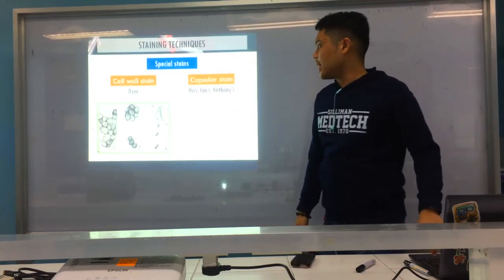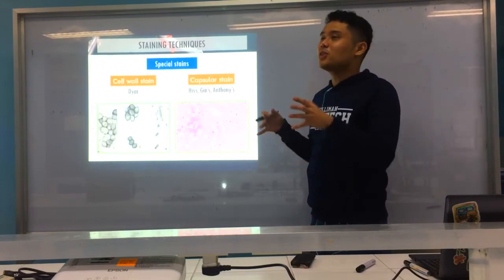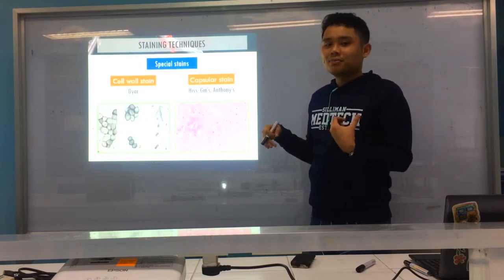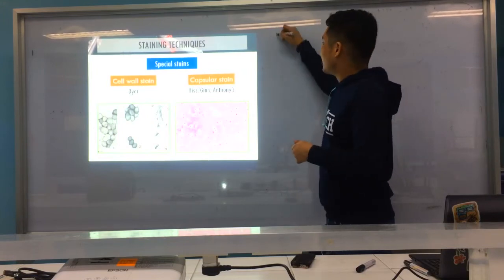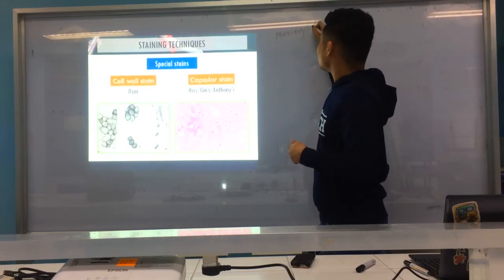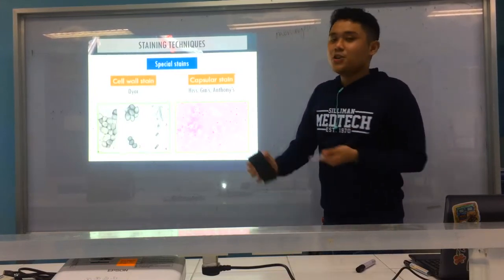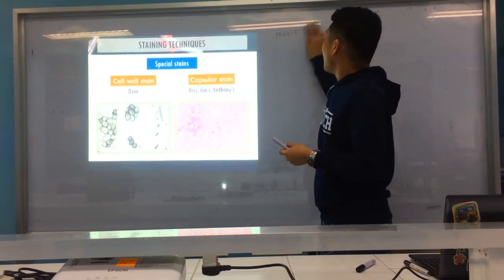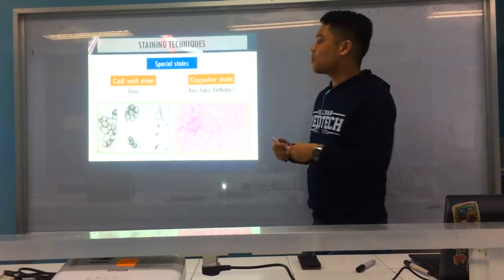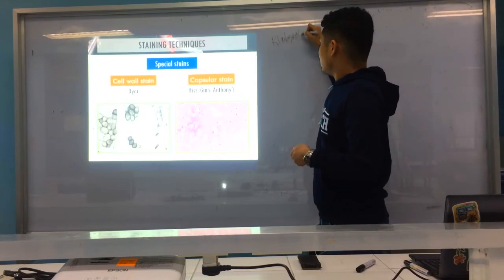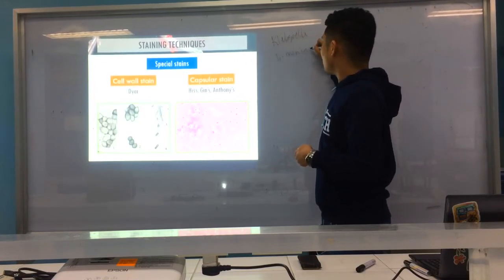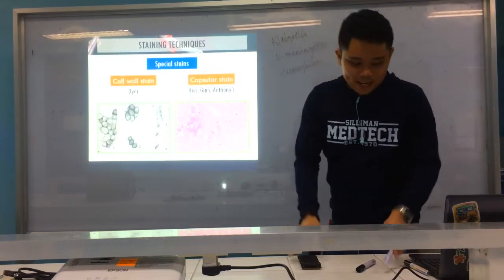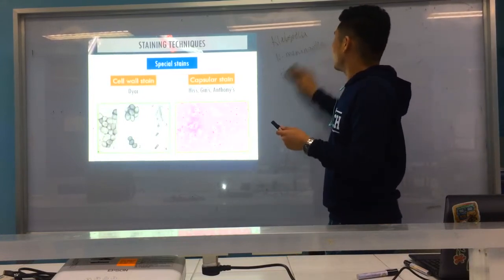Next, you have your capsular stains — Hiss, Gins, and Thorn's. Encapsulated organisms commonly cause meningitis. Examples of encapsulated organisms: Klebsiella, Neisseria meningitidis, and Haemophilus — some of them have capsules. This will be further explained in bacteriology.